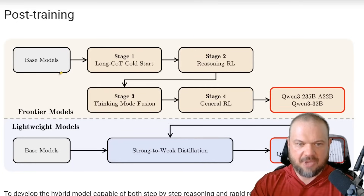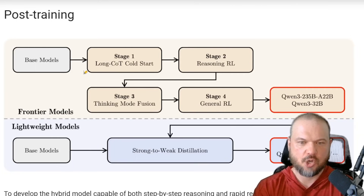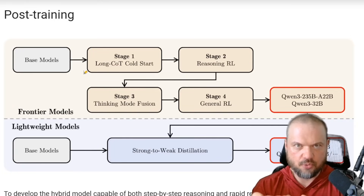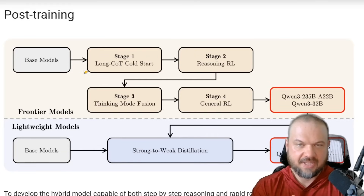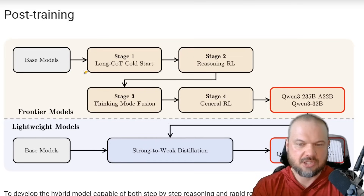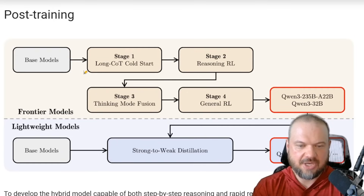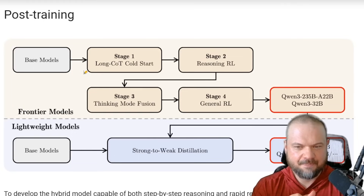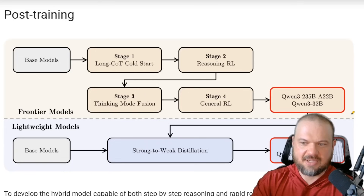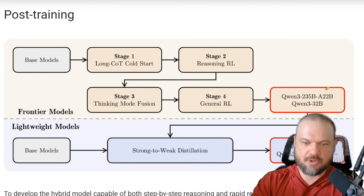Here's the post-training. Stage one is a long chain-of-thought cold start — they give the model a small number of examples of how to reason through problems, which kickstarts its ability to do reasoning. Stage two is reasoning reinforcement learning: when it gets correct answers, it's positively reinforced. Stage three is the thinking mode fusion — since it has two modes, thinking and non-thinking, stage three fuses them together. Stage four is general reinforcement learning. What's produced is the big flagship model, the 235B-A22B, and the QN3 32 billion parameter dense model, alongside the MOE model.